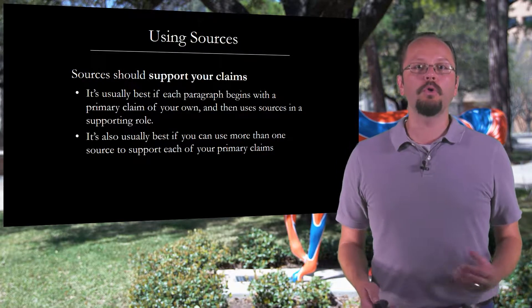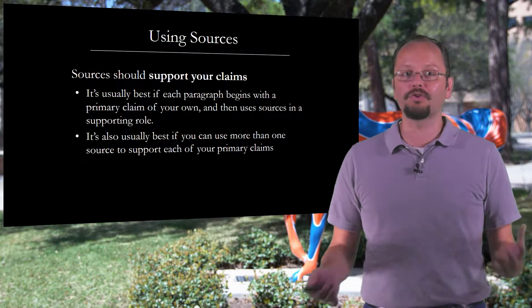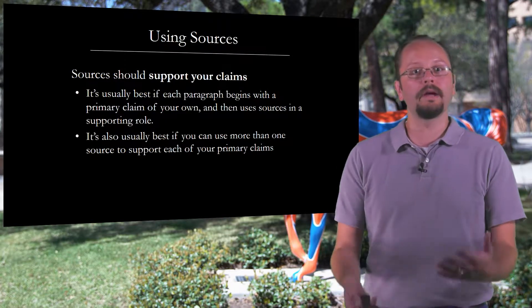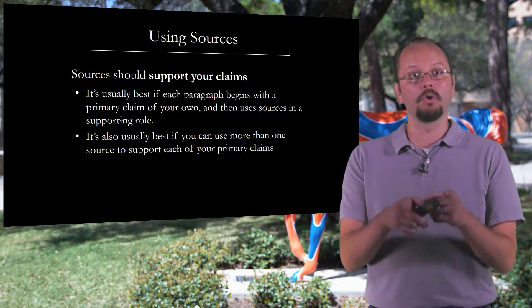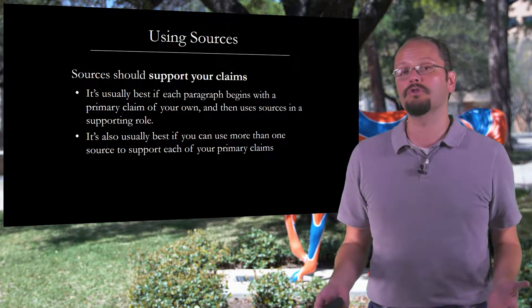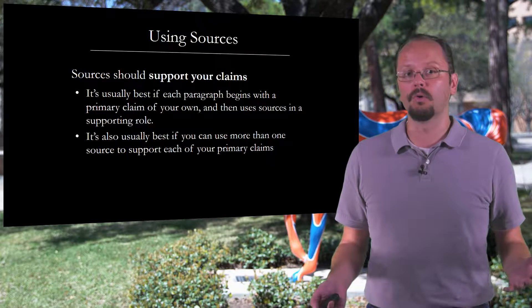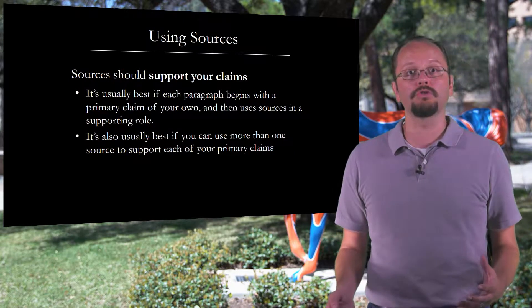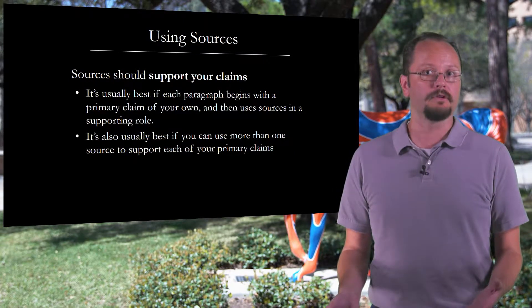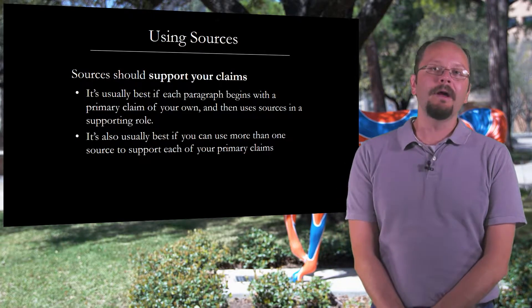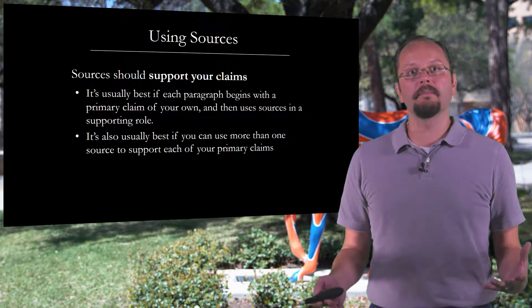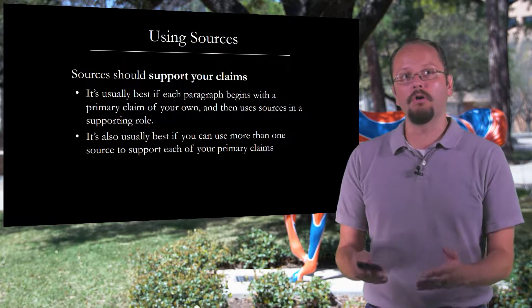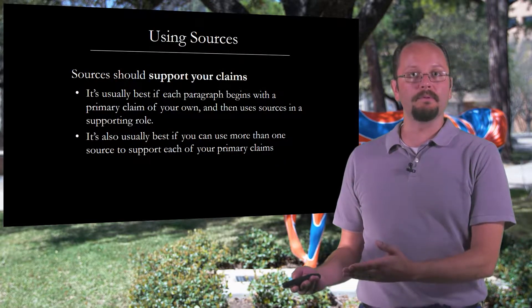Sources should support your primary claims about what's going on with this policy. It's usually very helpful if each of your paragraphs begins with a primary claim of your own and then uses sources in a supporting role. It's also usually best if you can use more than one source to support each of your primary claims. By claim, I mean some claim that you are making about what's going on with this policy.